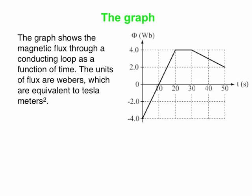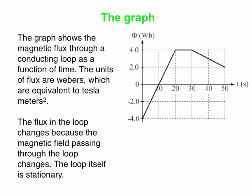We have a graph of magnetic flux through a conducting loop. The units are Webers, equivalent to Tesla meter squared. The flux in the loop changes because the magnetic field passing through the loop is changing, and the loop itself is stationary and has a fixed area. It's nice to know exactly how we're producing this change in flux.